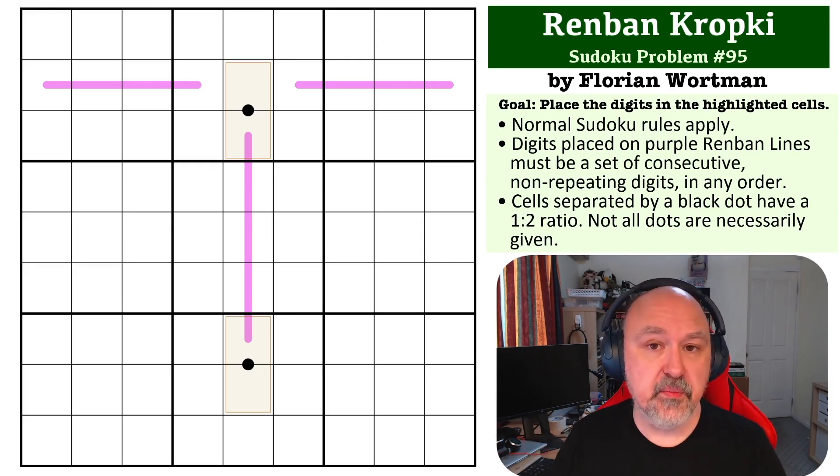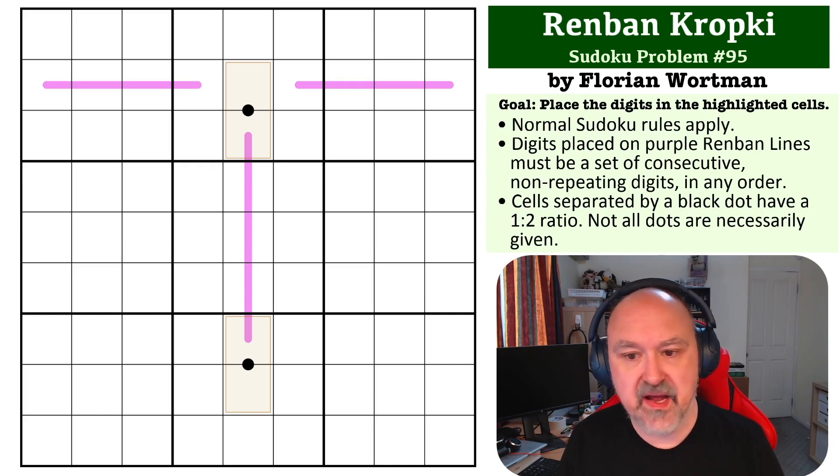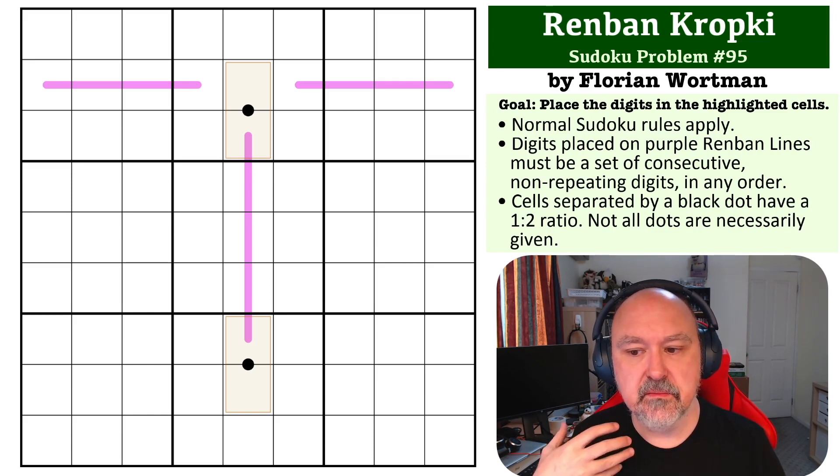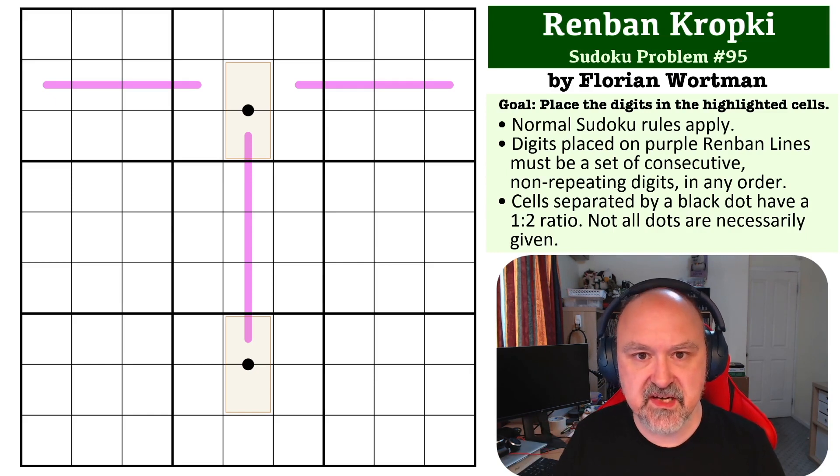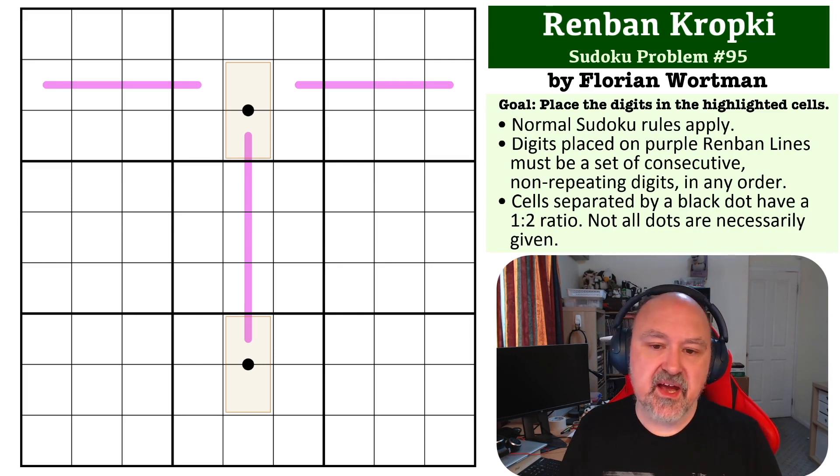There will be a link below to try this. The rules are Renban and Kropki. The purple lines must contain sets of consecutive non-repeating digits in any order. The cells separated by black dots must contain digits in a one to two ratio - one must be double the other. Grab the link below to try this problem yourself. I'll wait for a few seconds so you can pause the video and give this one a try.